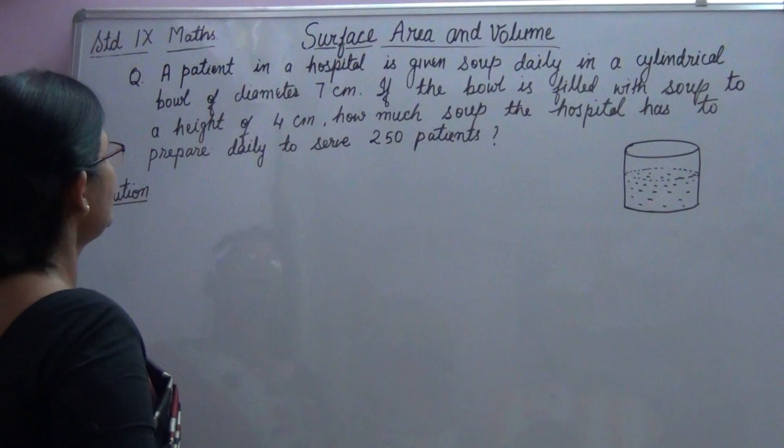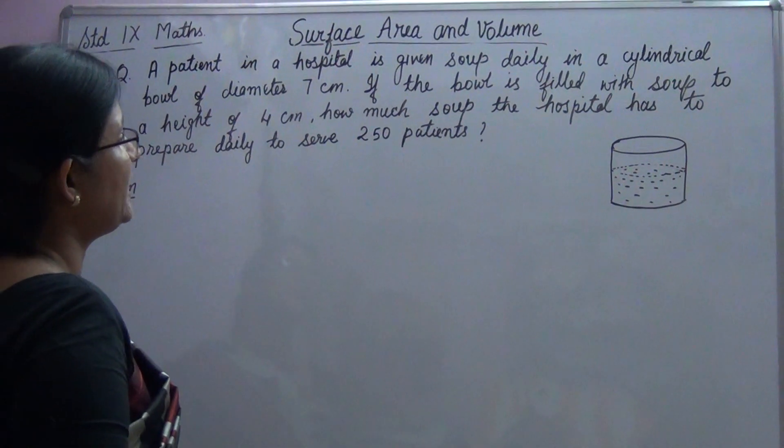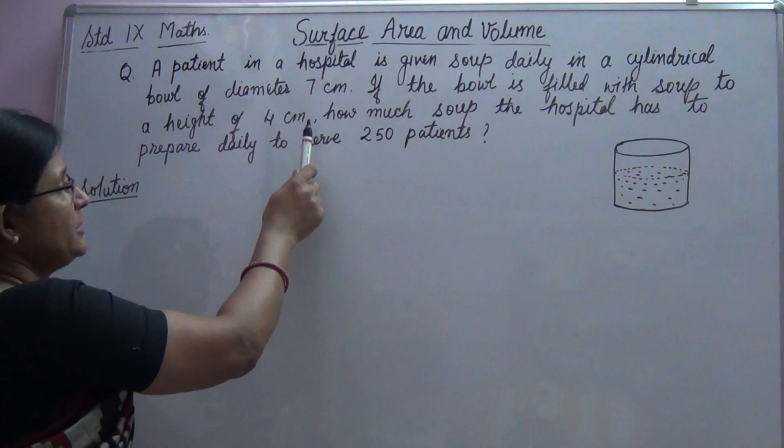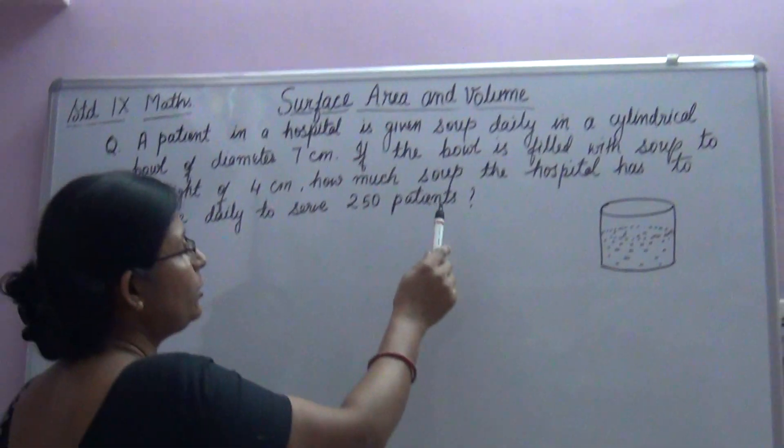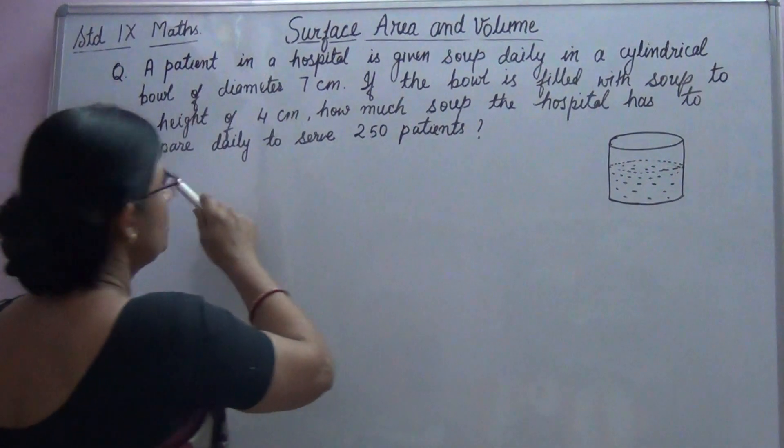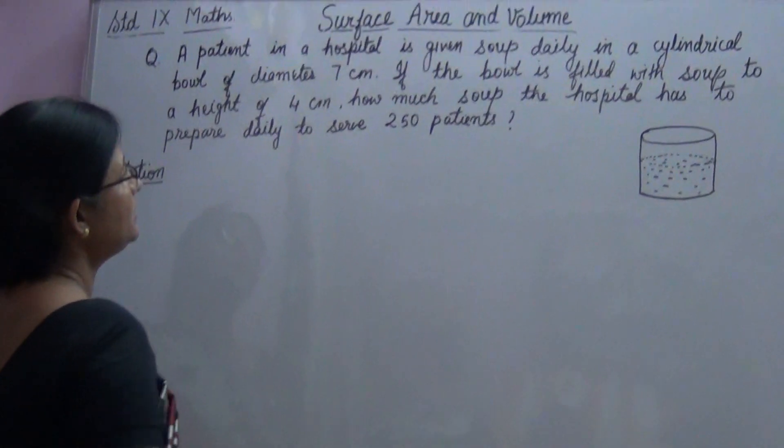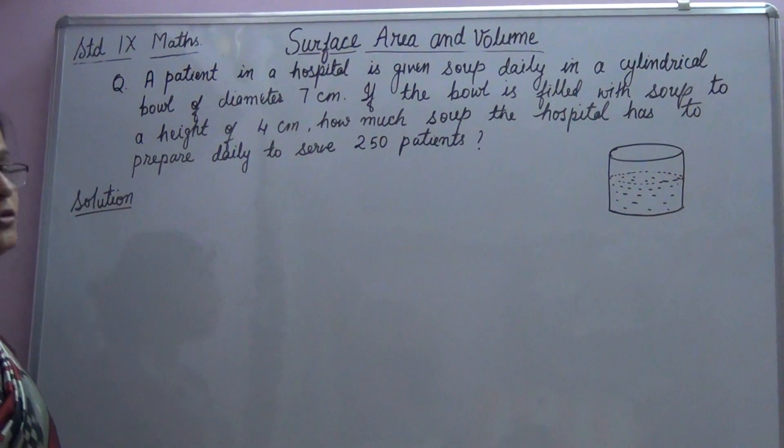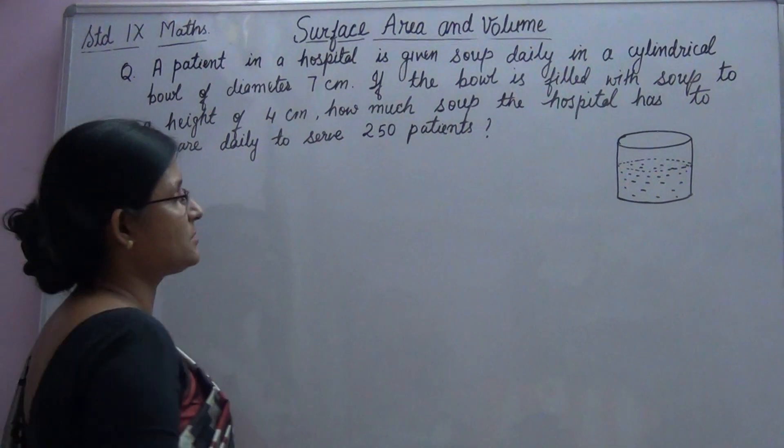The question is: a patient in a hospital is given soup daily in a cylindrical bowl of diameter 7 cm. If the bowl is filled with soup to a height of 4 cm, how much soup the hospital has to prepare daily to serve 250 patients?